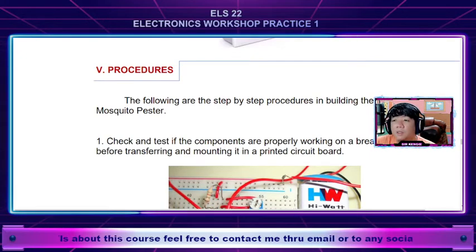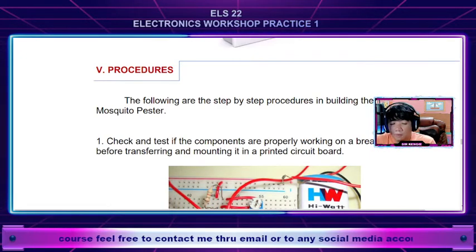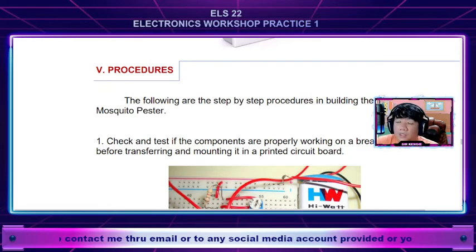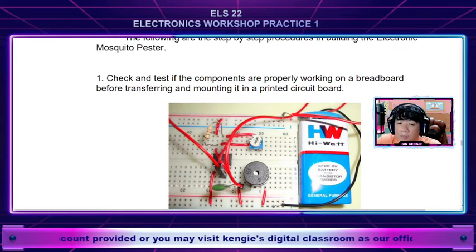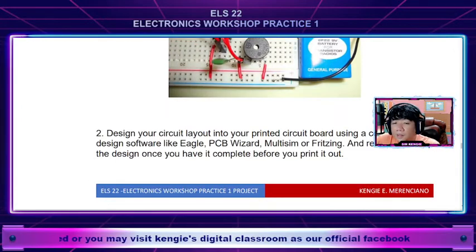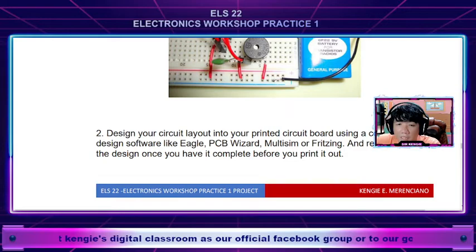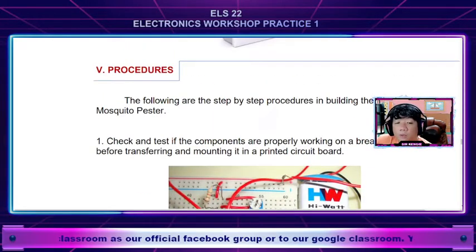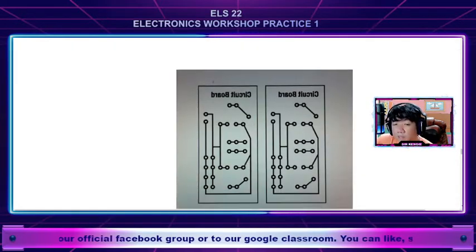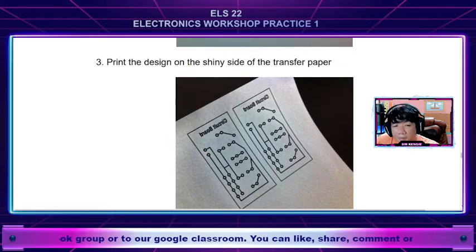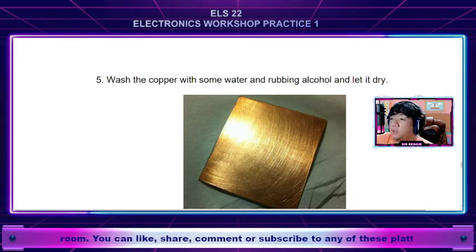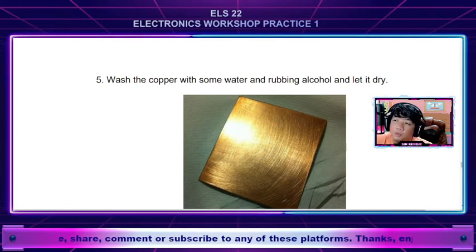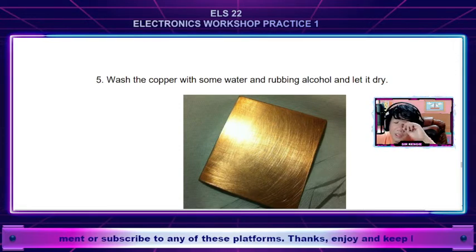After the design, we proceed to the procedures section. This part is the step-by-step construction of the device — from design and planning until you assemble and test the project to see if it's working. The format requires you to provide captions for each picture showing how you constructed the project. For example: first, check and test the components; second, design the PCB. Tell us how you built the project and supplement it with pictures — not just pictures, but with captions explaining what each picture represents.